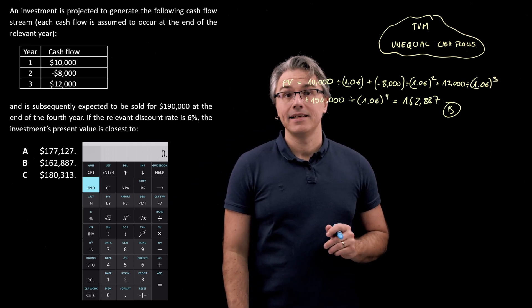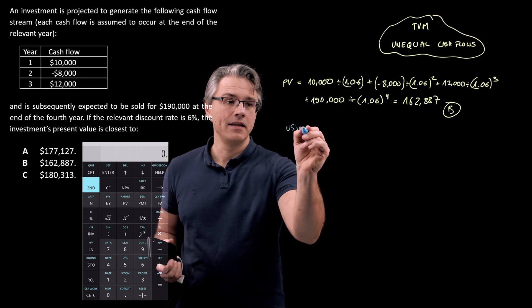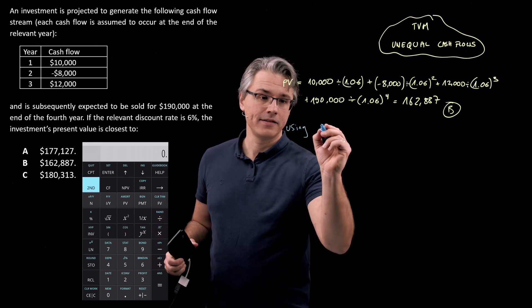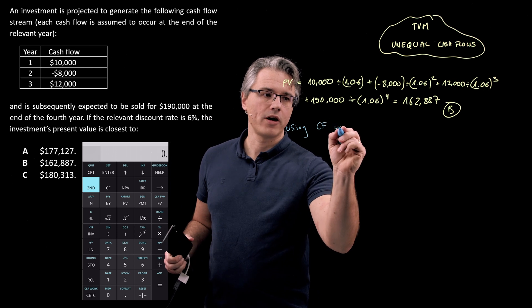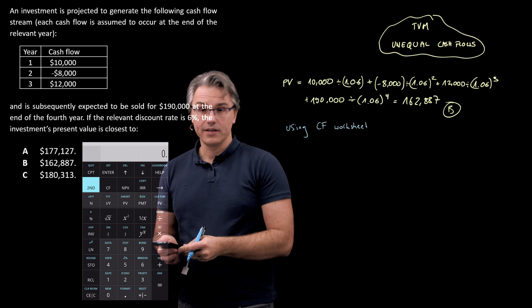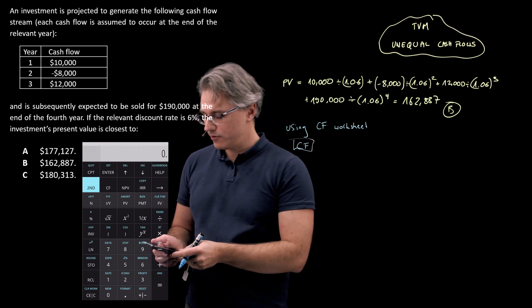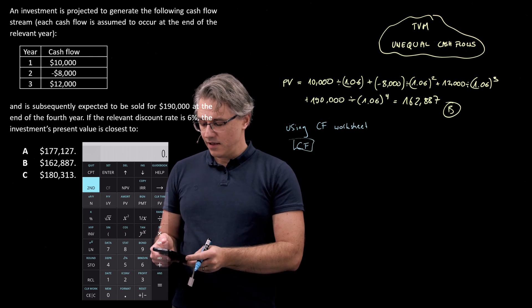So let's explore getting to the same answer, but using an important function of your calculator. That's the CF worksheet. And you go to this worksheet by pressing the CF key, which is sitting right next door to the second key. So let's press CF.